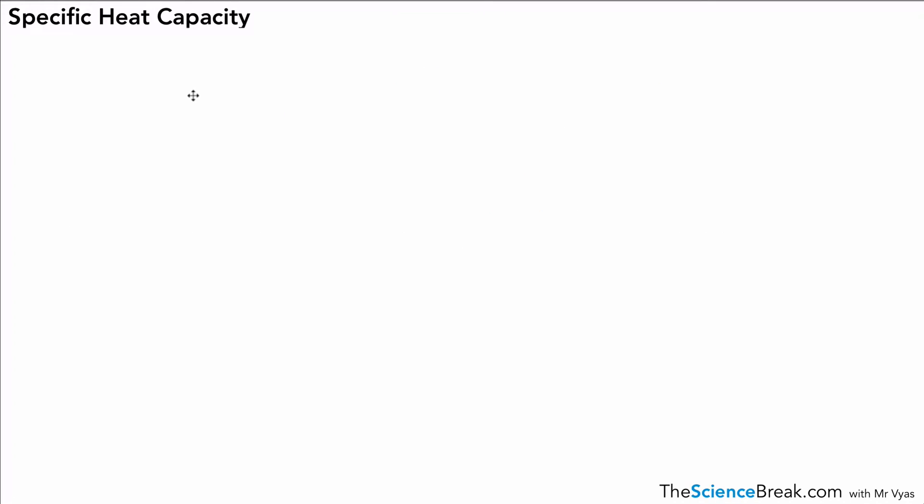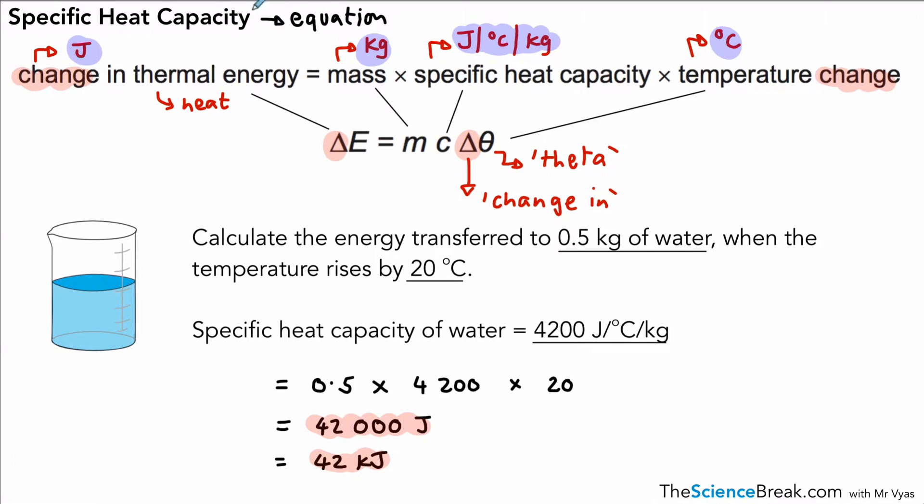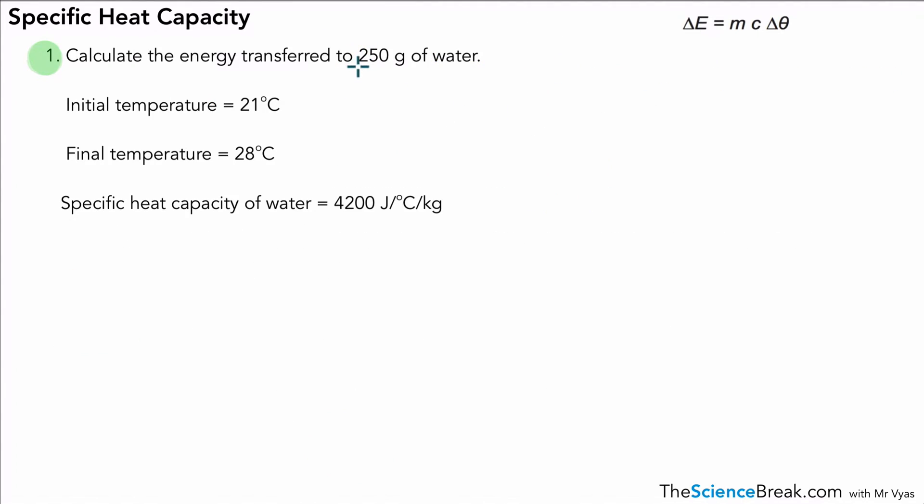Let's have a look at a couple more questions. So this is still quite straightforward, but there's a couple of tricky bits that you've got to watch out for in the exam. We can take this equation across because we're going to be allowed to have that in the exam. We've got 250 grams of water, we've got a start temperature and a final temperature, and we've got a specific heat capacity of water.